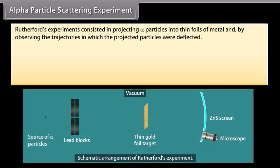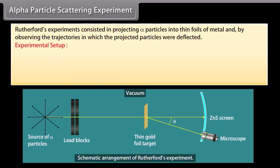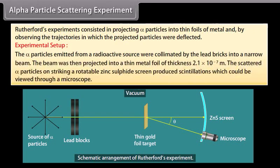Alpha particle scattering experiment. Rutherford's experiments consisted in projecting alpha particles into thin foils of metal and observing the trajectories in which the projected particles were deflected. Experimental setup: The alpha particles emitted from a radioactive source were collimated by the lead bricks into a narrow beam. The beam was then projected into a thin metal foil of thickness 2.1 × 10^-7 meter. The scattered alpha particles on striking a rotatable zinc sulfide screen produced scintillations which could be viewed through a microscope.